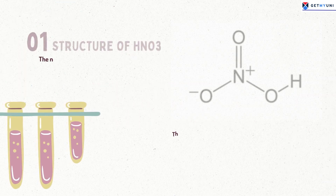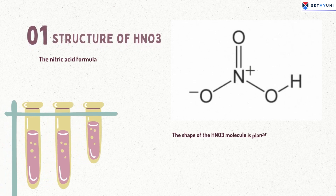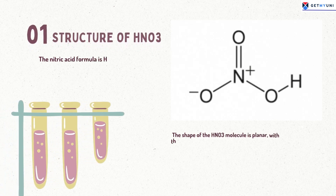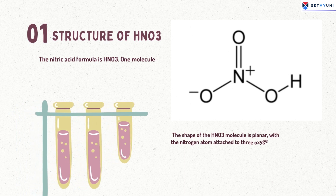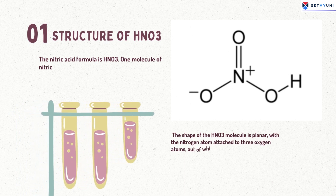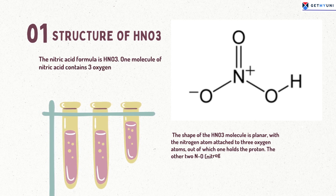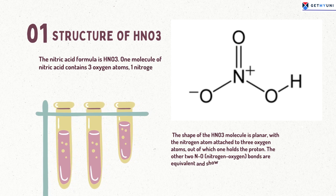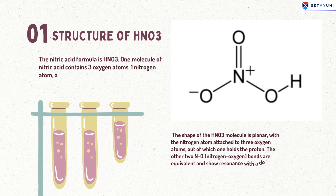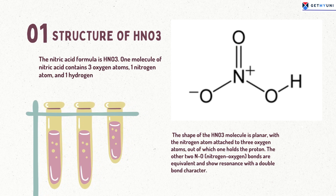The nitric acid formula is HNO₃. One molecule of nitric acid contains three oxygen atoms, one nitrogen atom, and one hydrogen atom. The shape of the HNO₃ molecule is planar, with the nitrogen atom attached to three oxygen atoms, out of which one holds the proton. The other two nitrogen-oxygen bonds are equivalent and show resonance with a double bond character.